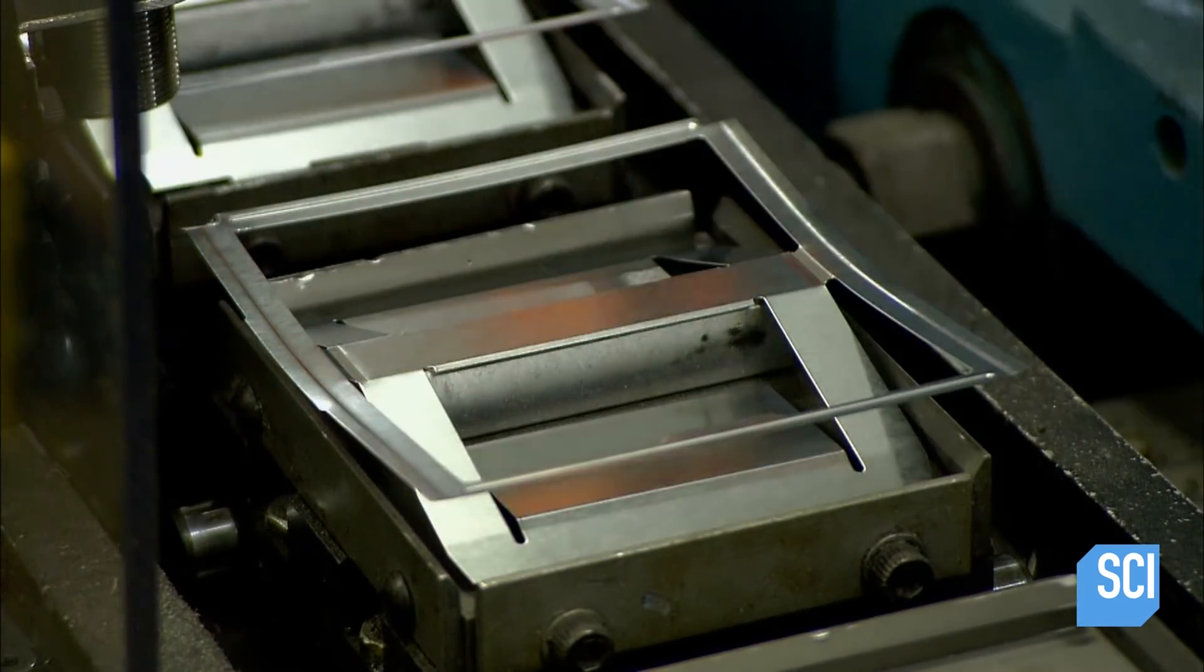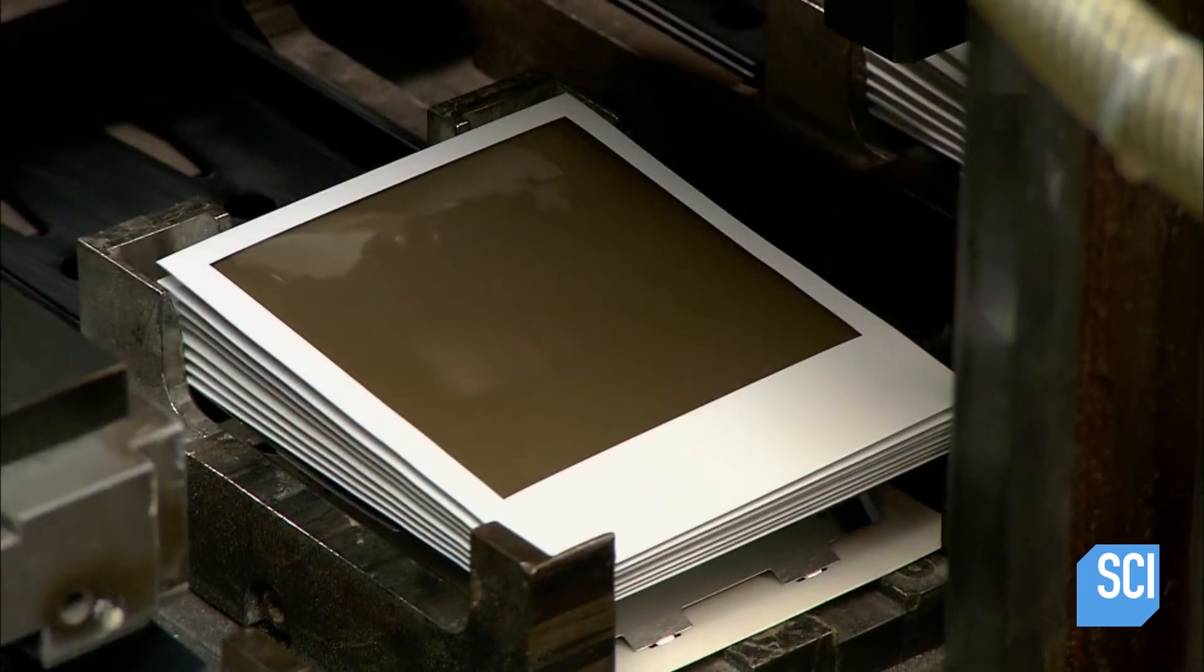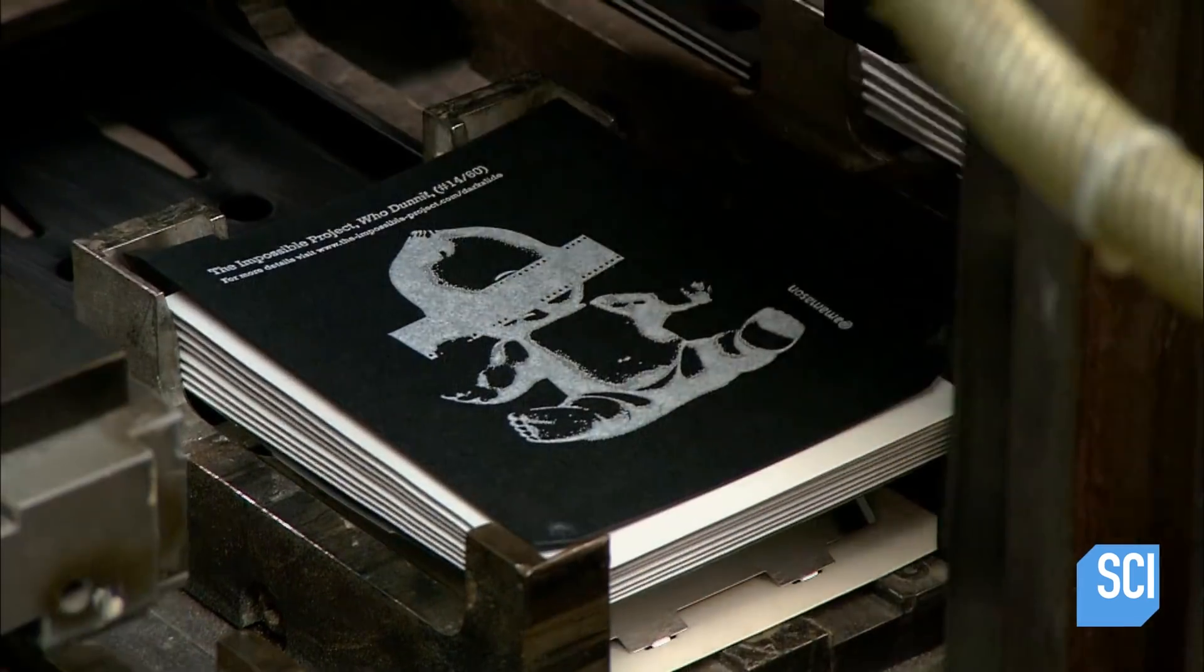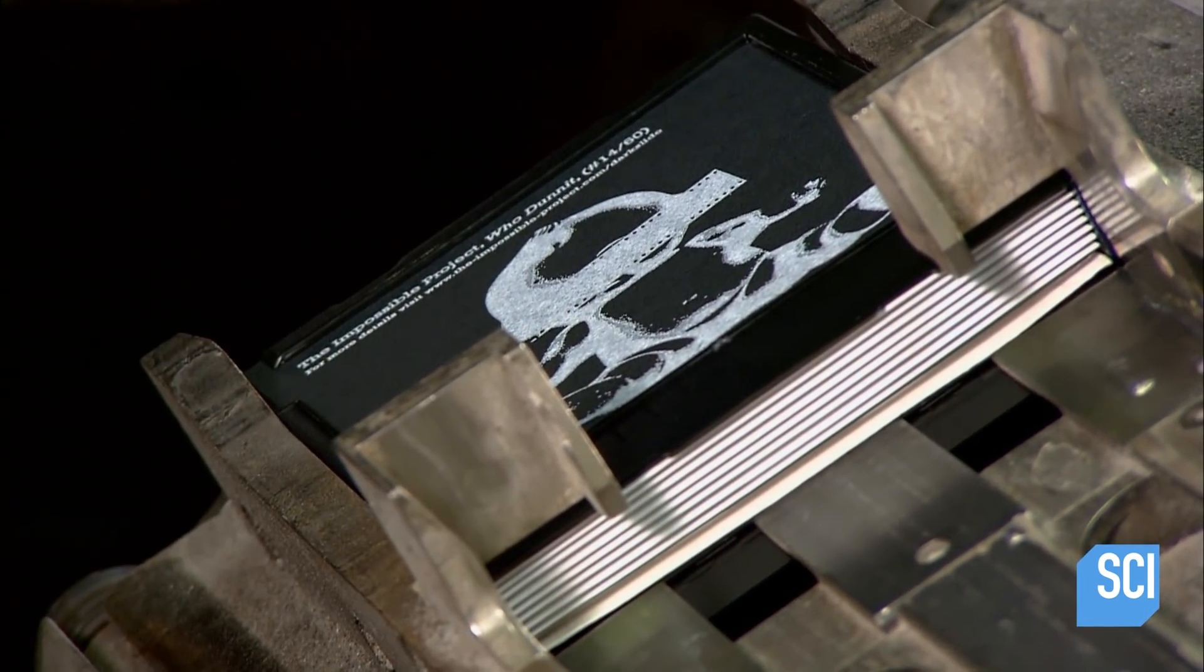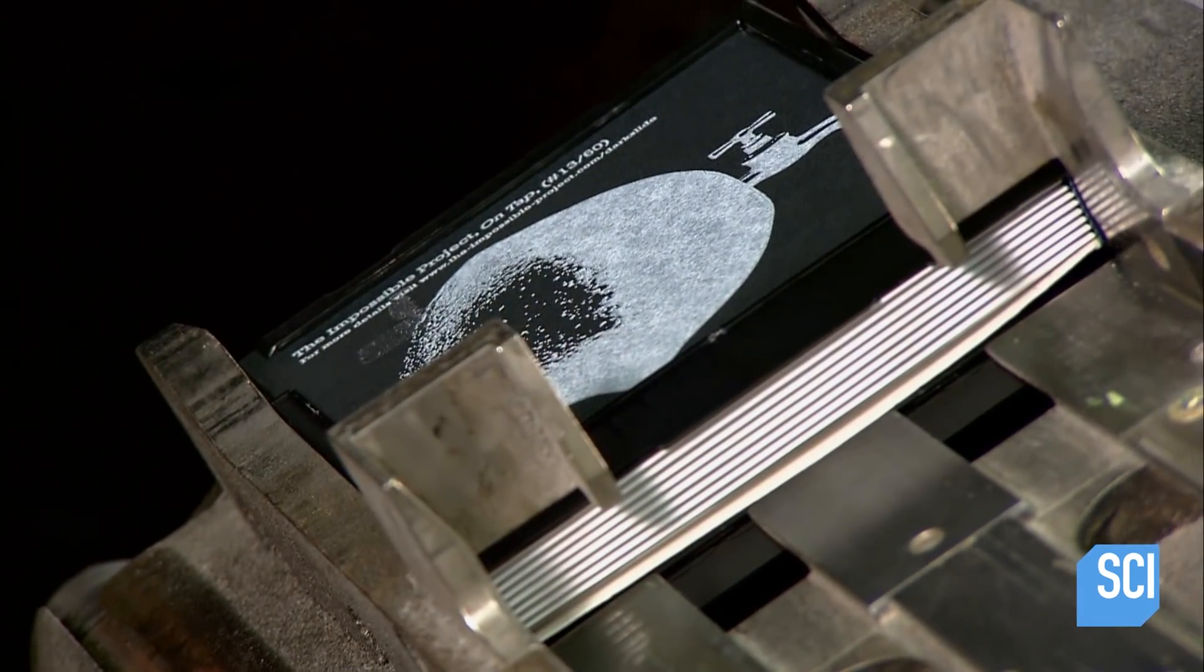Meanwhile, robot arms deposit a rectangular spring on a battery. Then they position the eight pictures on the spring battery assembly, followed by a light blocking cover. The stack then moves forward to be squeezed into a plastic cassette.